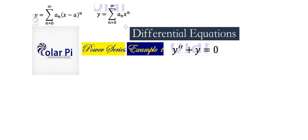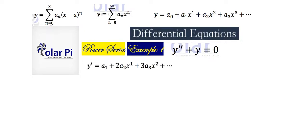What we're saying is the solution y that we seek can be written in a series form like this. This is in closed form. If we write our solution y term by term, it looks like this. Then y prime would look like this. Looking at y prime, it's a bit easier to figure out how to write y prime in closed form using sigma notation, which will look like this.